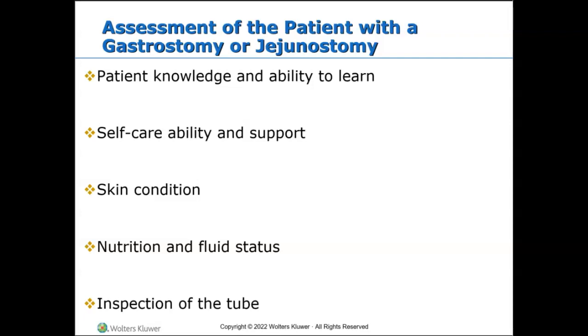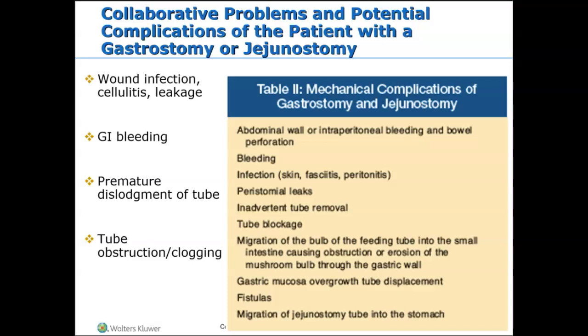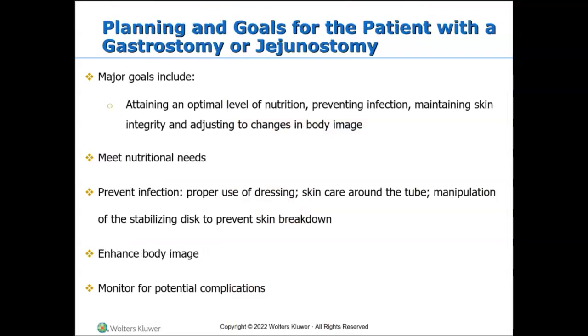Monitor for complications, the most common of which is wound infection. Educate patients on complications like cellulitis, leakage, GI bleeding, dislodgement of the tube, and tube obstruction. Patient major goals include attaining an optimal level of nutrition, preventing infection, maintaining skin integrity, adjusting to changes in body image, preventing complications, and enhancing overall body image.